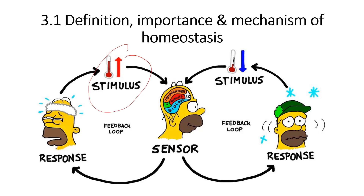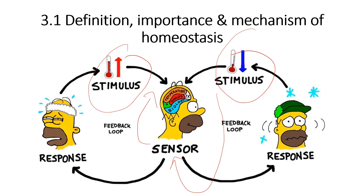In homeostasis, any fluctuation from the normal condition is referred to as a stimulus. This stimulus will be detected by the senses or the receptor and then sent to the integrating center, where the decision will happen. It then activates the feedback loop, causing a response to occur, after which the condition will return back to normal.